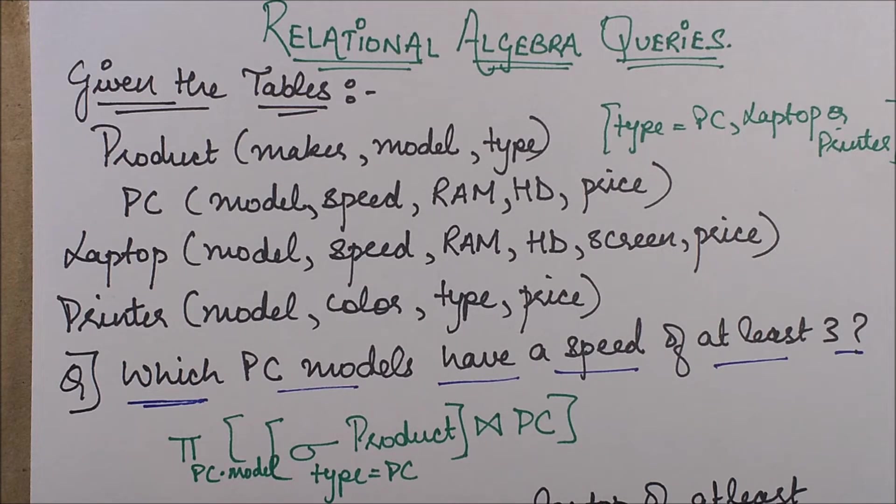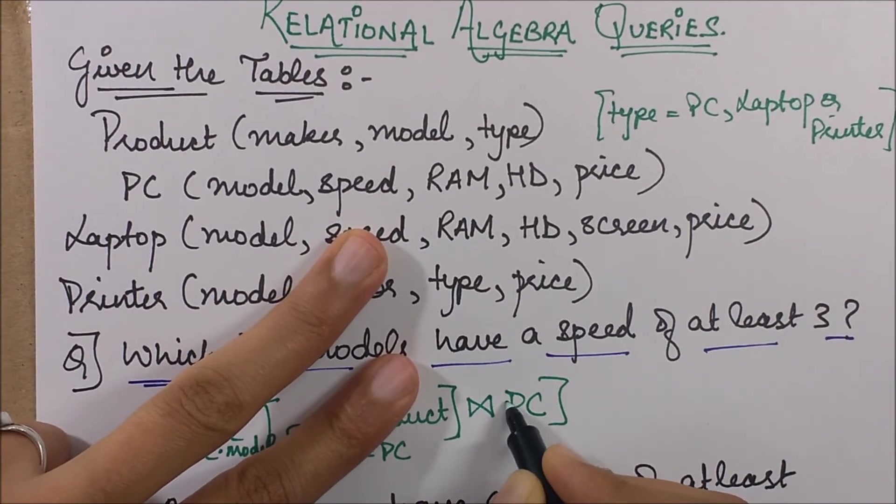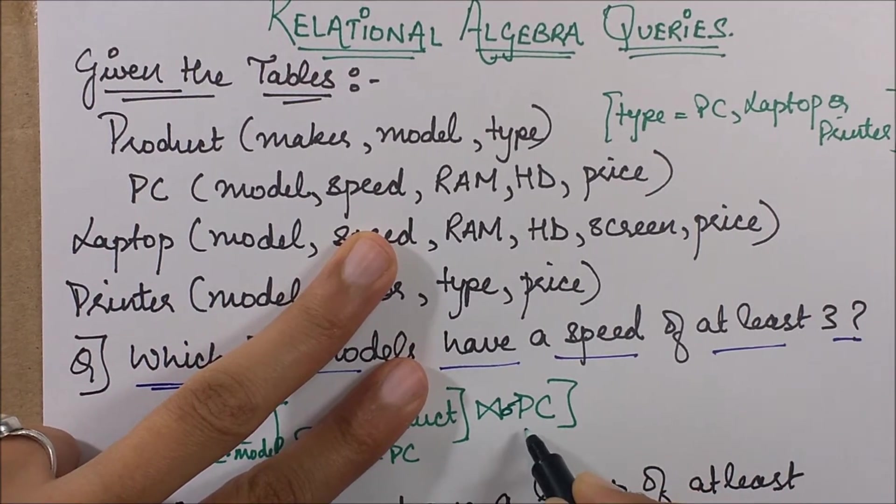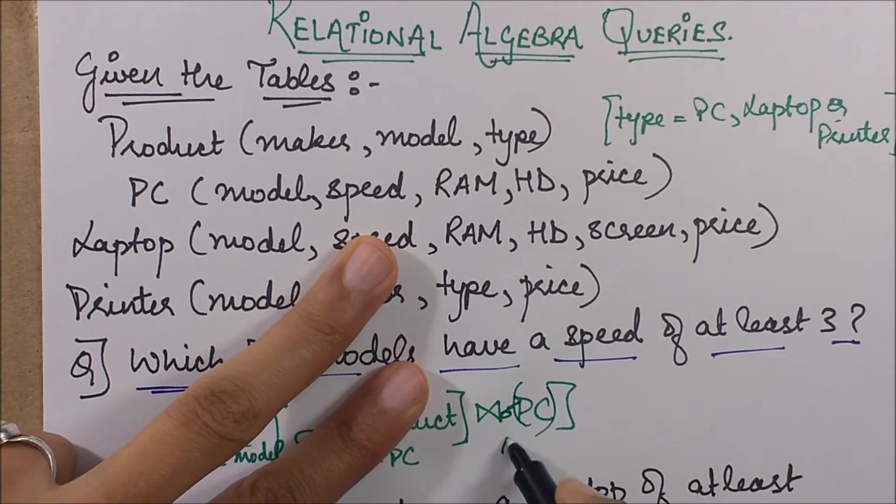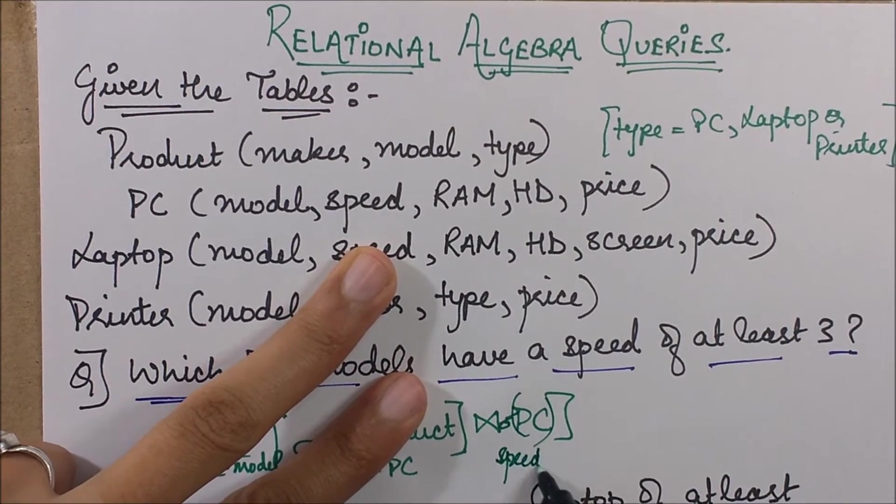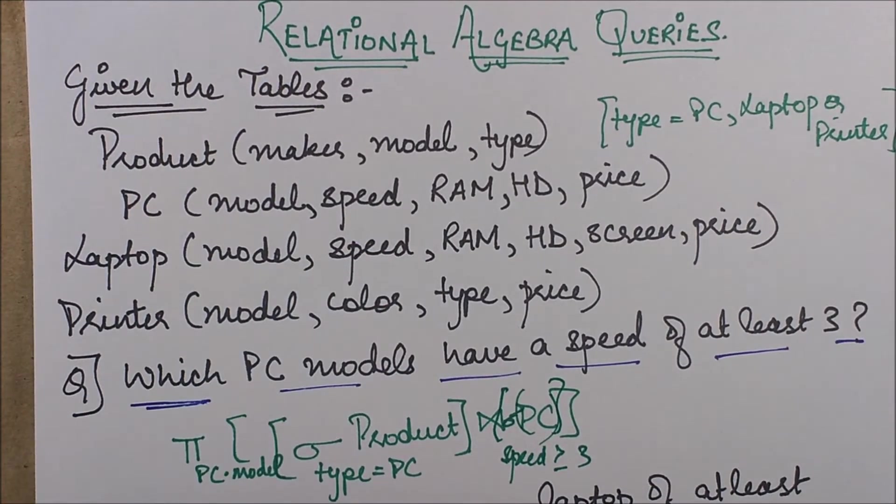First of all, we select those PCs with speed of at least three. So I'll have a selection operator over here and a condition speed is greater than or equal to three. Now I will join this table with what? With my product table.